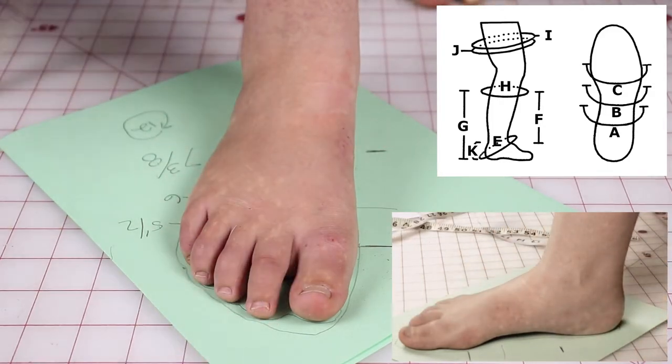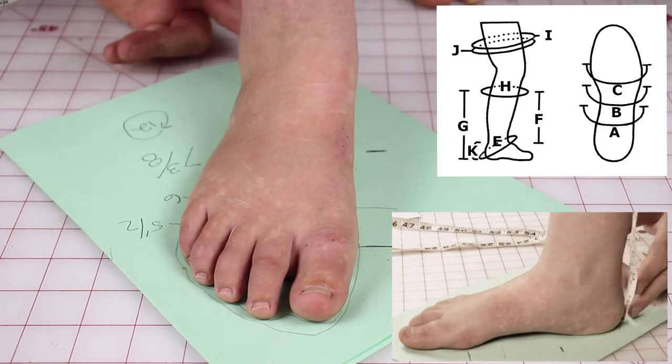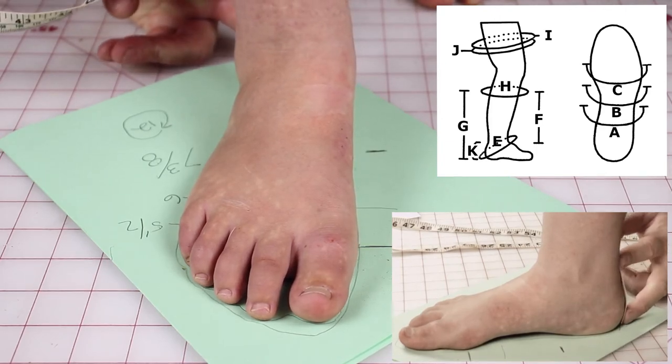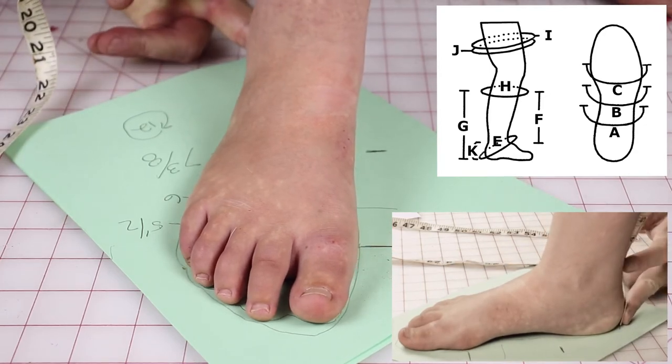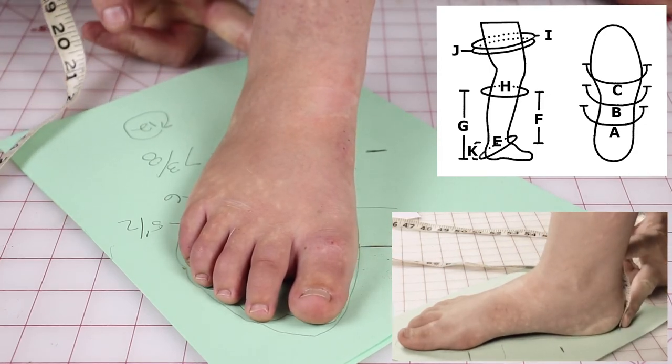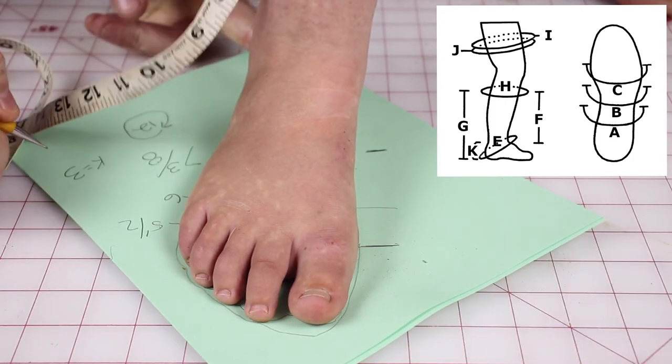The last measurement is the K measurement. And that is the Achilles heel tendon, where it is the deepest on her, on this particular person. And that measurement is three. So K equals three.